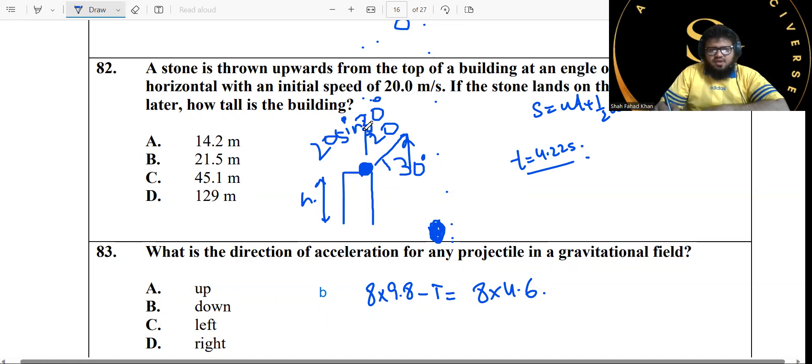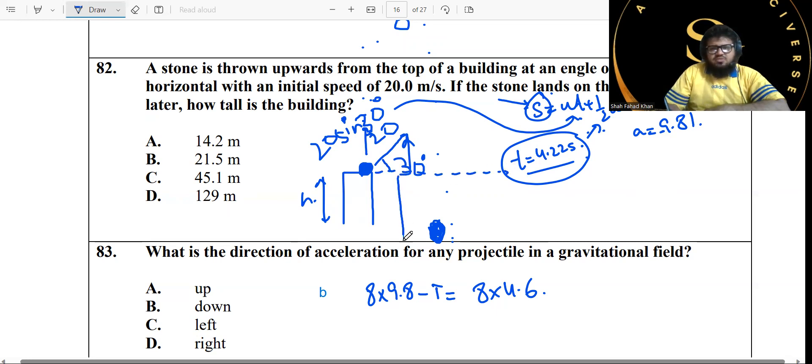Now you have 20 sine of 30. You have the initial velocity. You can put the initial velocity here. You can put the time as 4.22 seconds in here, and acceleration of free fall is 9.81. Now remember one thing: acceleration is negative because I want you to determine the displacement here, because this is actually the displacement. Starting point, this displacement is in a negative direction compared to the upward direction. Acceleration is always downward and it's always negative, negative 9.81.